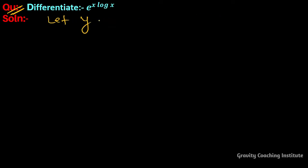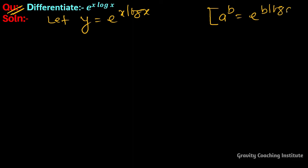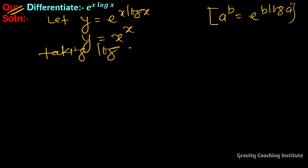Differentiate e to the power x log x. We let y equal to e to the power x log x. We know that a to the power b equals e to the power b log a, so y equals x to the power x. Now taking log on both sides.